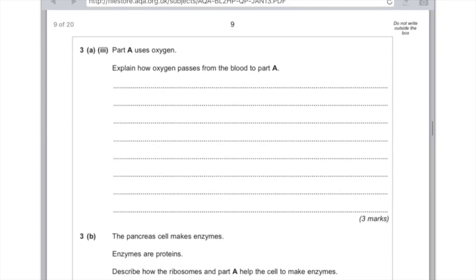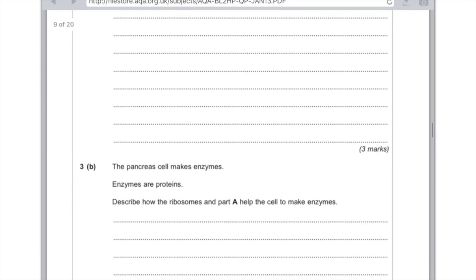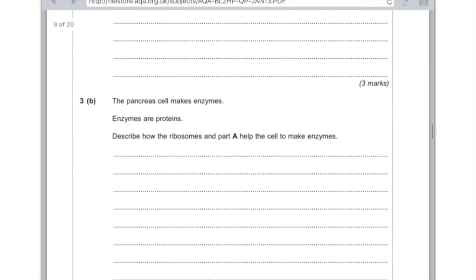The pancreas cell makes enzymes. Enzymes are proteins. Describe how the ribosomes and part A help the cell to make enzymes. First of all, you would say that ribosomes make proteins. That's actually their job and they make them out of amino acids. So that's the second available mark. And thirdly, you need to say that part A, the mitochondria, provides the energy needed for this process.